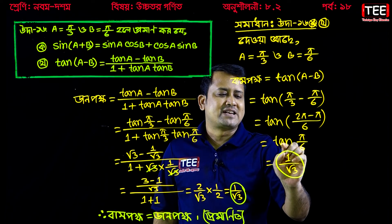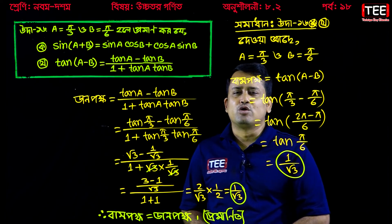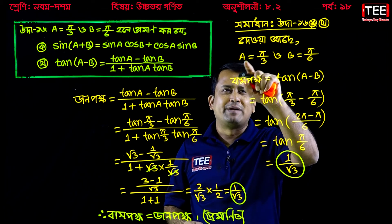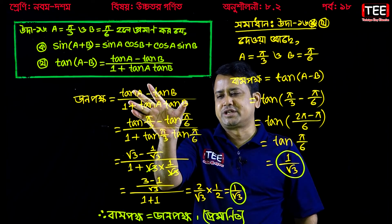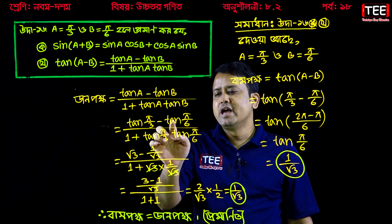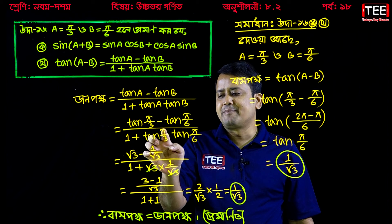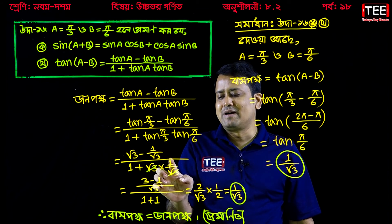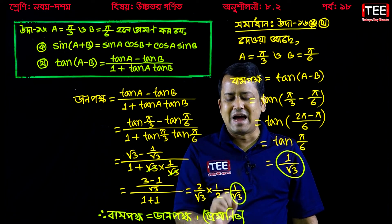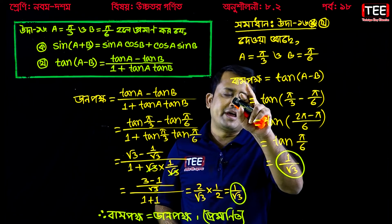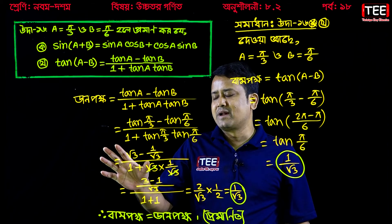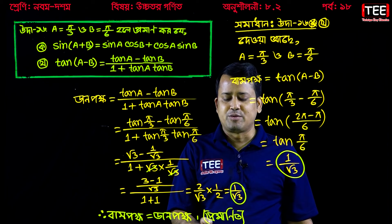It is written that A is pi by 3 and B is pi by 6. Here we can write tan(pi/3) equals root 3, and tan(pi/6) is 1 by root 3. So the numerator and denominator each involve 1 by root 3.